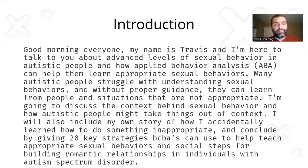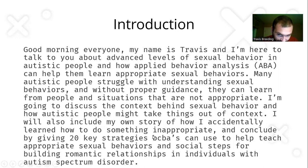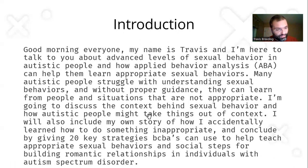Today's introduction. My name is Travis, and I'm here to talk to you about advanced levels of sexual behavior in autistic people and how applied behavior analysis, ABA, can help them learn appropriate sexual behaviors. Many autistic people struggle with understanding sexual behaviors, and without proper guidance, they can learn from people in situations that are not appropriate. I'm going to discuss the context behind sexual behavior and how autistic people might take things out of context. I will also include my own story of how I accidentally learned how to do something inappropriate. I'll conclude by giving 20 key strategies BCBAs can use to help teach appropriate sexual behaviors and social steps for building romantic relationships in individuals with autism spectrum disorder.